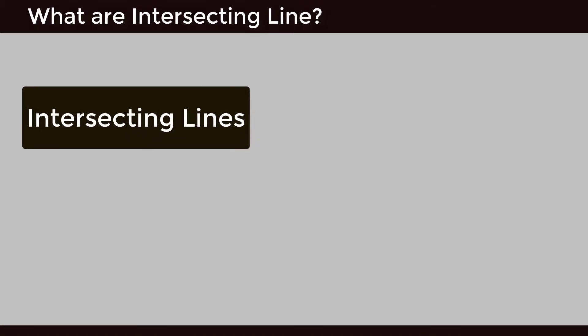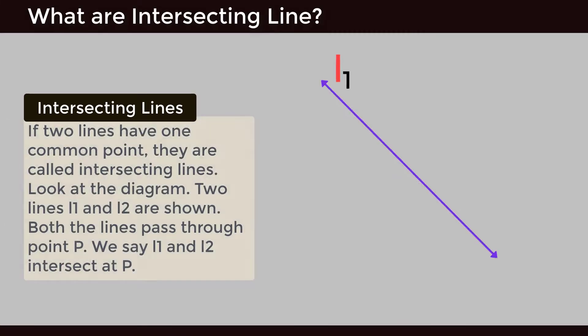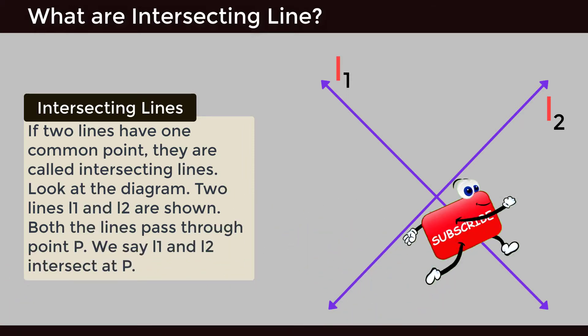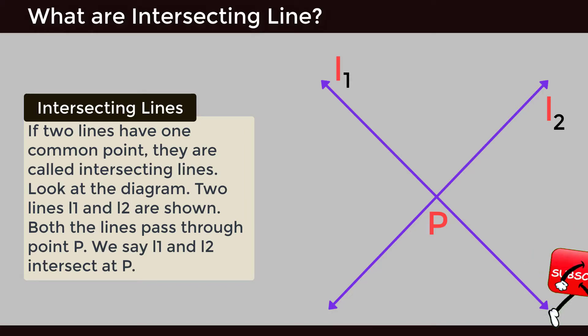Intersecting Lines: If two lines have one common point, they are called intersecting lines. Look at the diagram — two lines L1 and L2 are shown. Both lines pass through point P. We say L1 and L2 intersect at P.